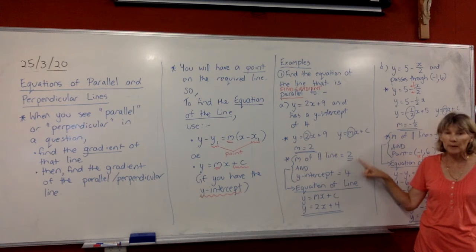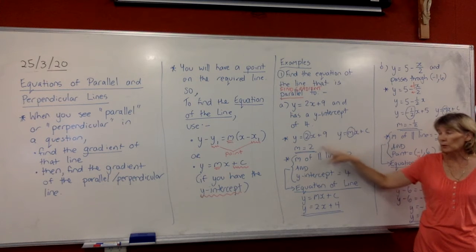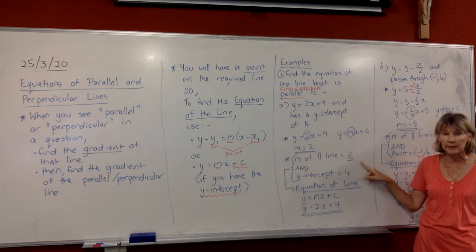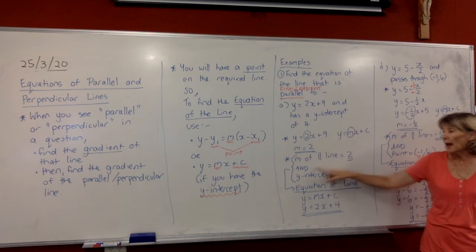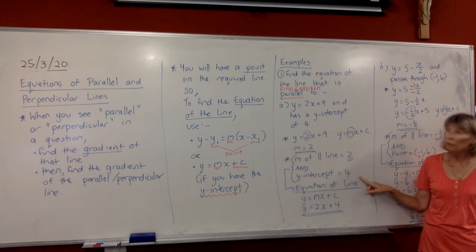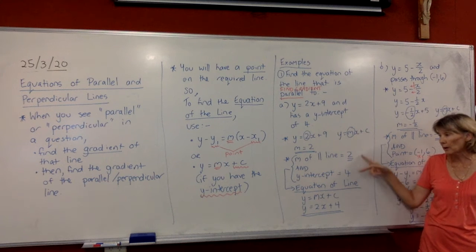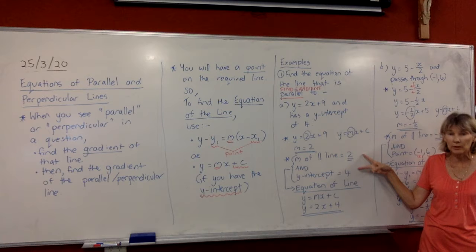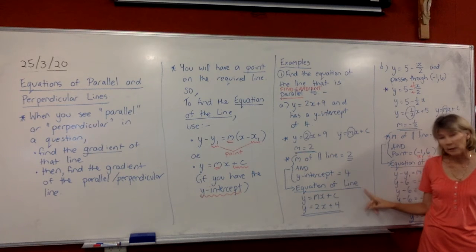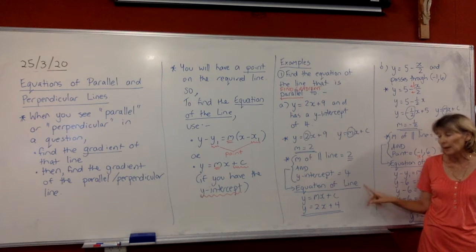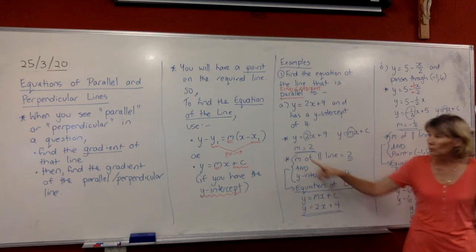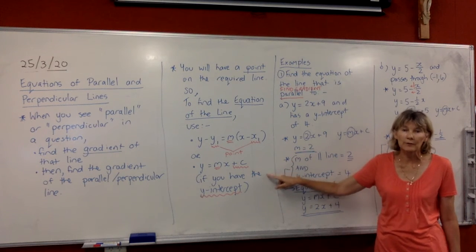I don't want you to skip that step. All right, if the gradient's the same, you've still got to restate it. And just write down that you also have a y-intercept given to you. So we're going to combine those two things to find the equation of the line. Make sure you put a heading down, equation of line, and then we're going to start using one of these two formulas, whichever is appropriate.